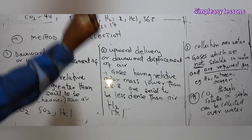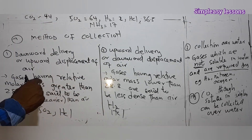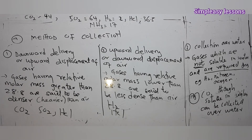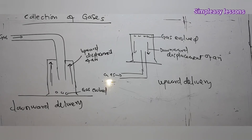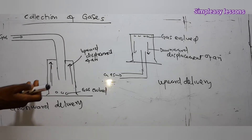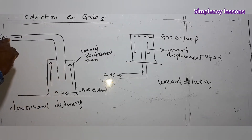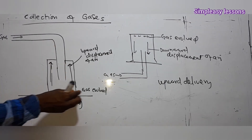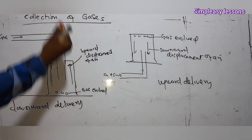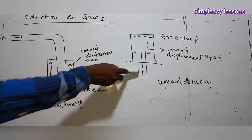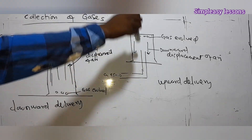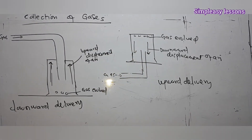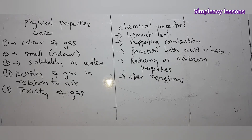Let's look at some diagrams to represent downward delivery and upward delivery. In downward delivery, the gas moves down into the collection vessel — this gas is definitely heavier than air — and air is displaced upward, giving upward displacement of air. In upward delivery, the gas moves up into the collection vessel, and air is displaced downward — downward displacement of air.